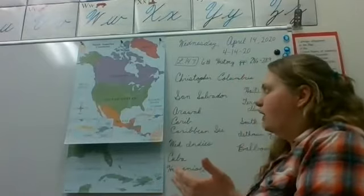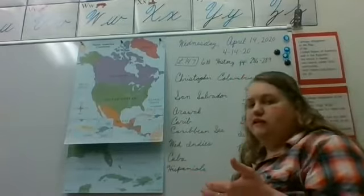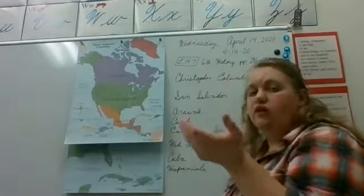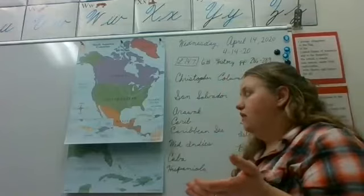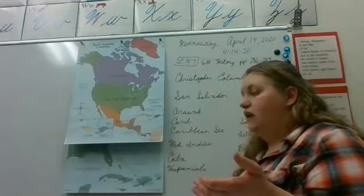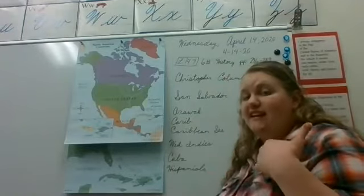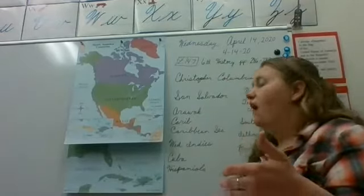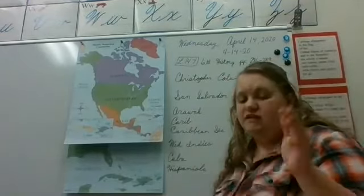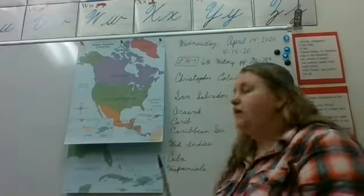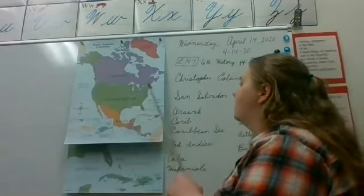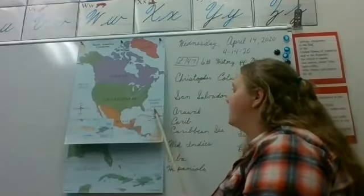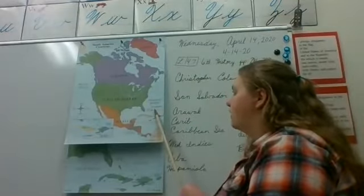That's where this idea comes from — when he came across, he thought he was near Asia, in the West Indies or East Indies. That's why he called them the Indies. But first of all, let's take a look at the places that he would have been in. San Salvador is where he landed first.